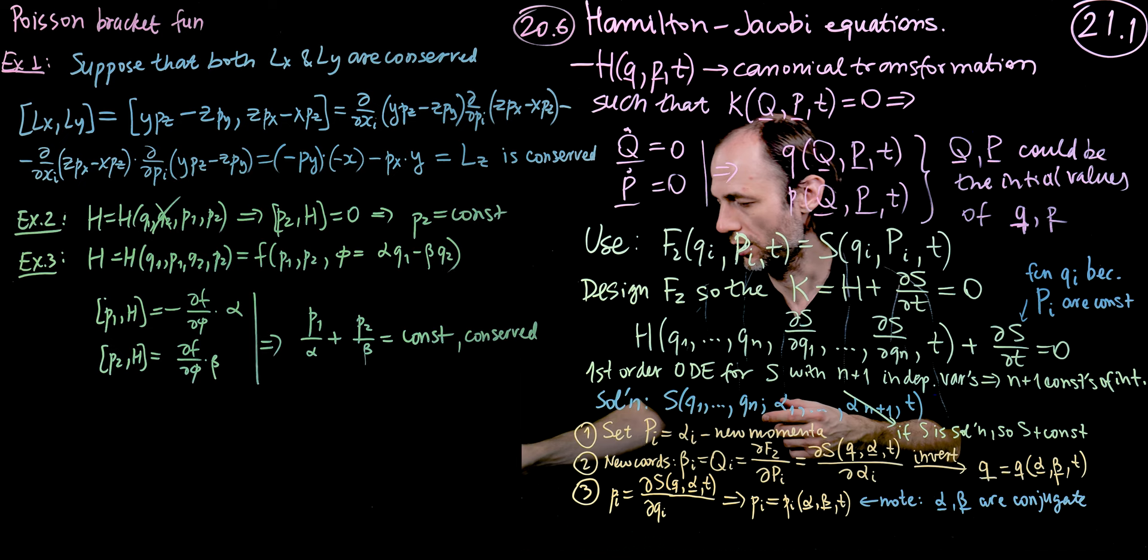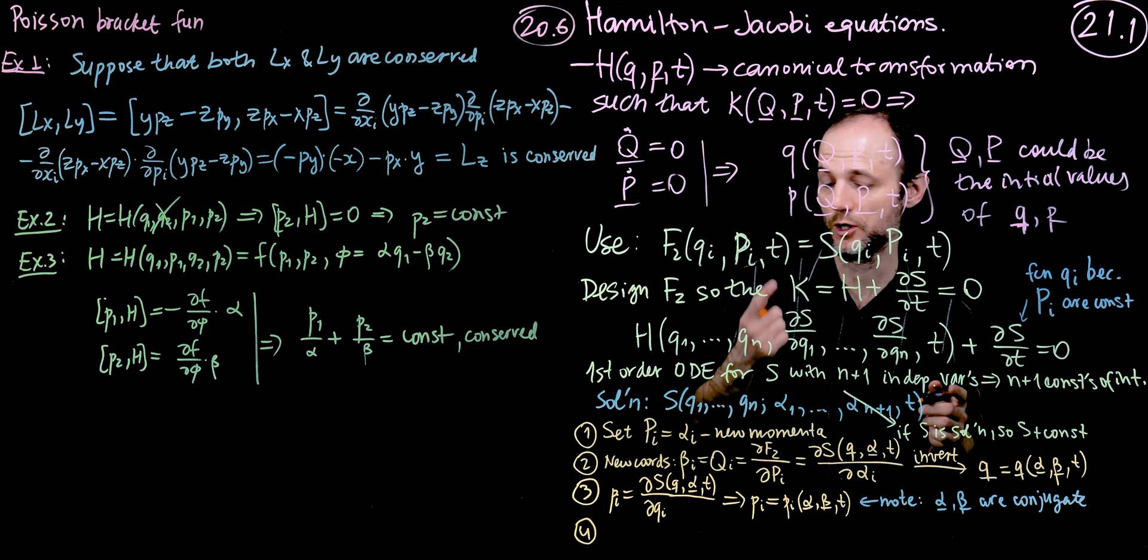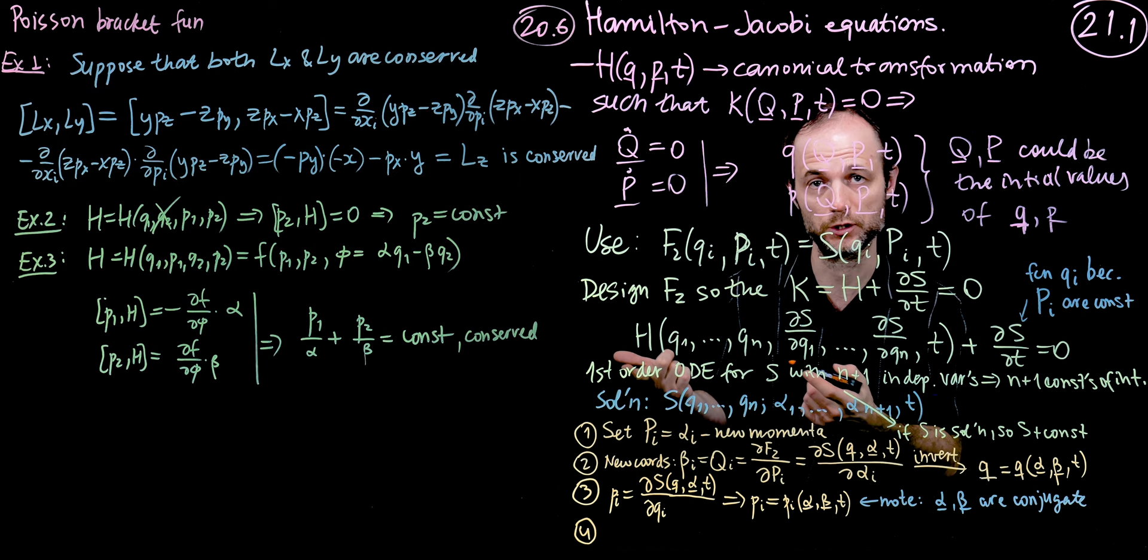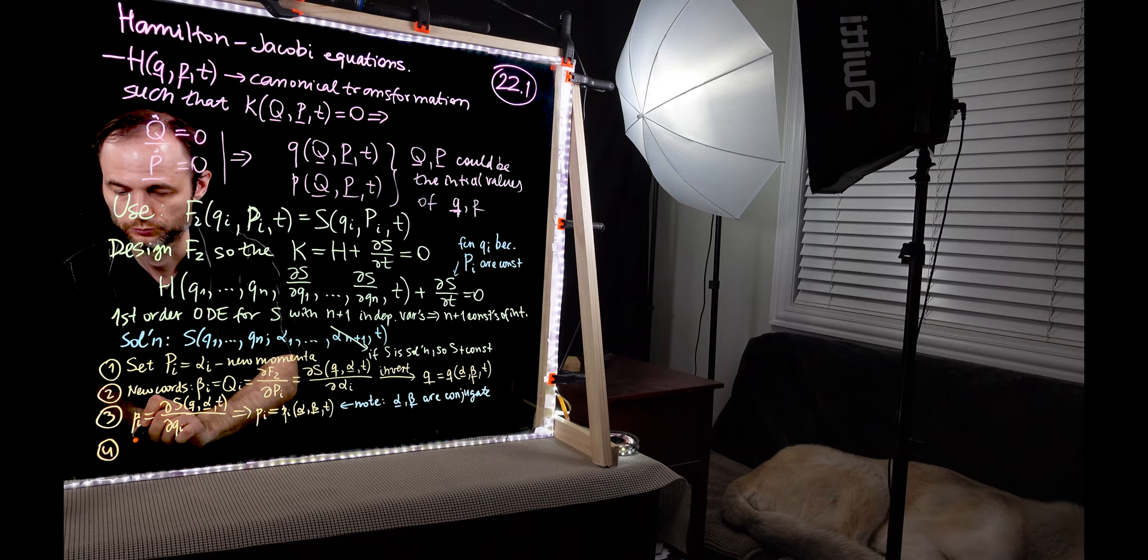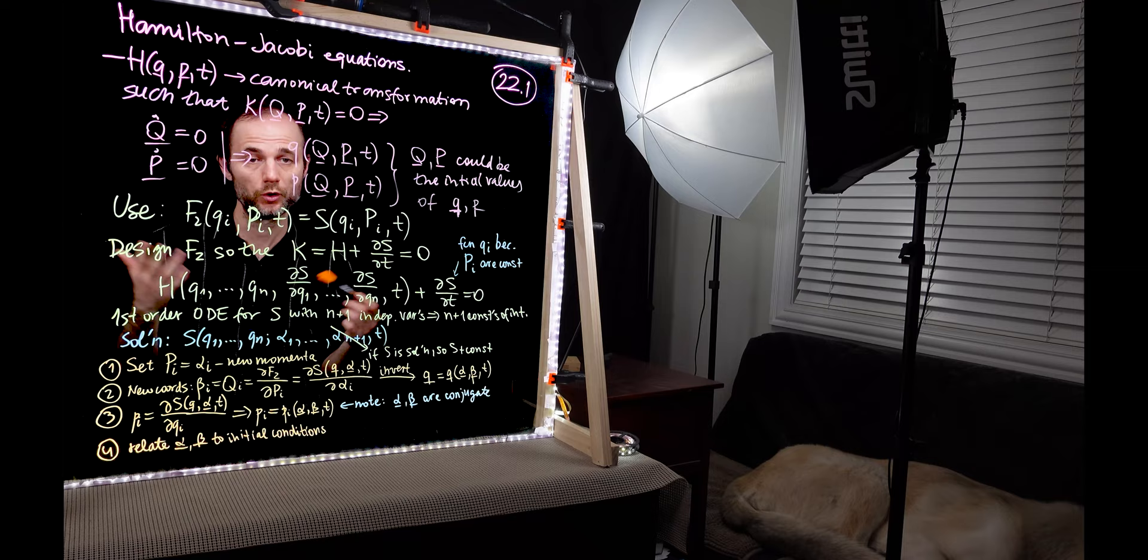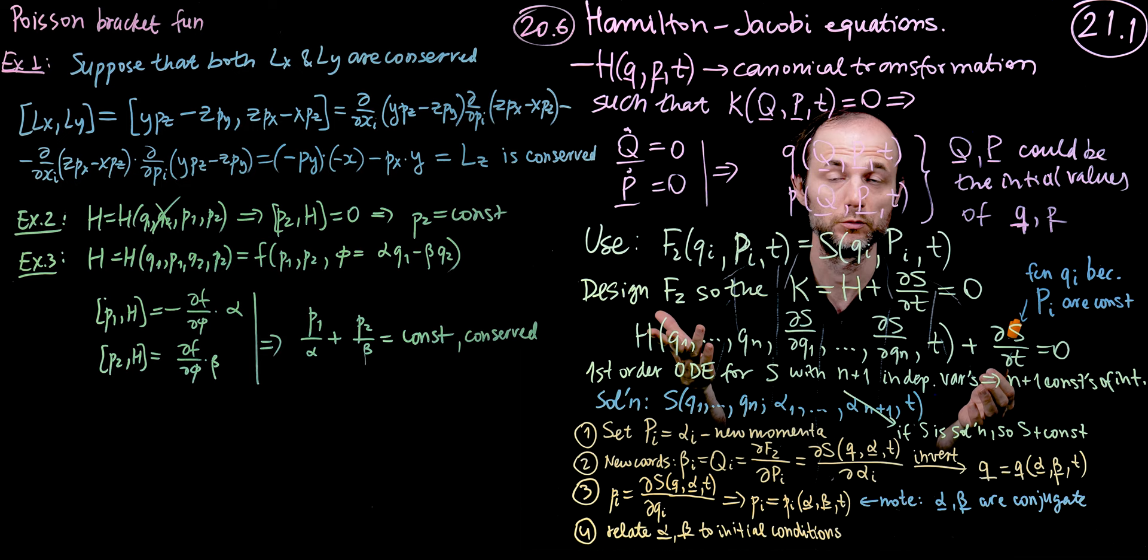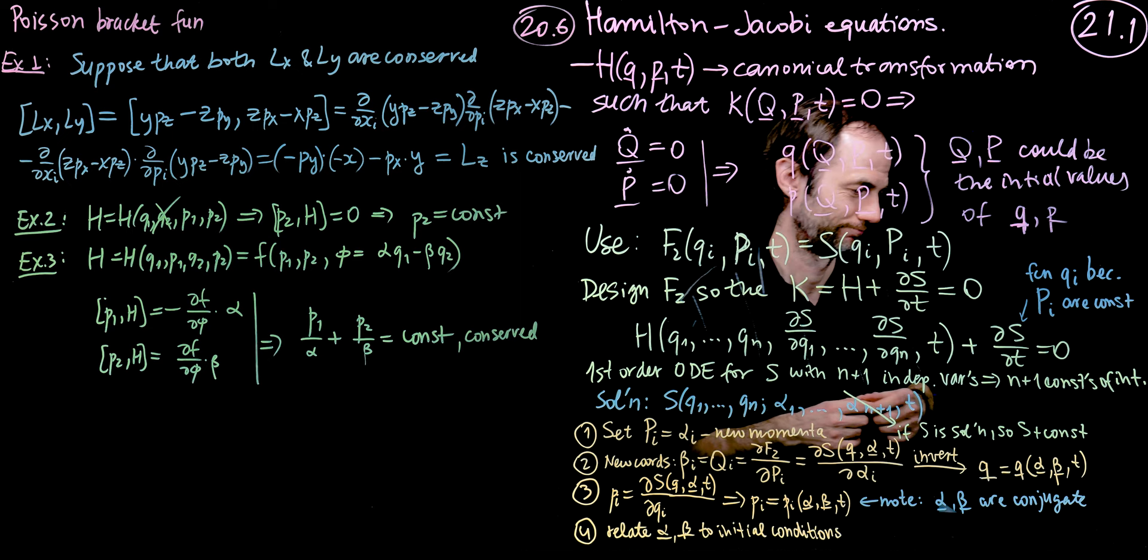Finally, all that's left for us is item number 4. That is, we would need to relate the alphas and betas to the initial conditions with which the system starts at time equals 0. That's all there is to it. Let's try and check out a few examples.